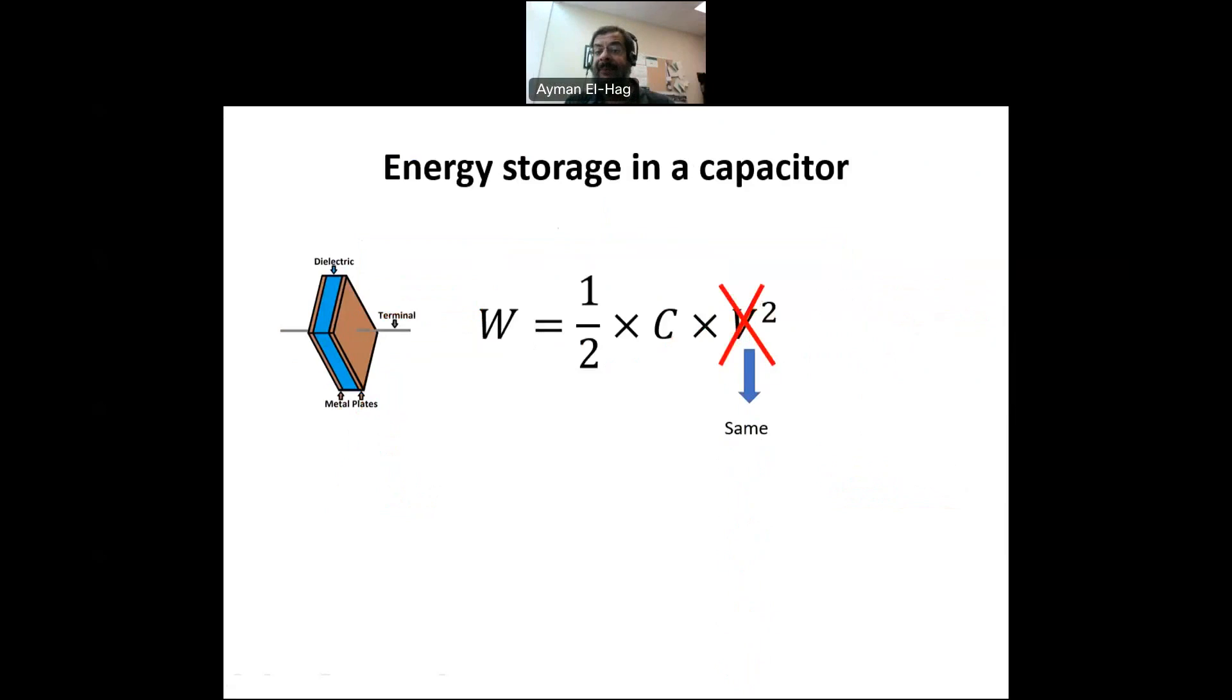Let's go to C. C is equal to epsilon 0, which is a constant, epsilon R, the dielectric constant or the relative permittivity, times A, the surface area, and D is the distance between the two electrodes. Now, epsilon 0 is a constant, so cannot be a factor. A and D, both of them are the same between the two capacitors. So, again, they cannot impact. They cannot show why we have a capacitor stored more energy than the other.